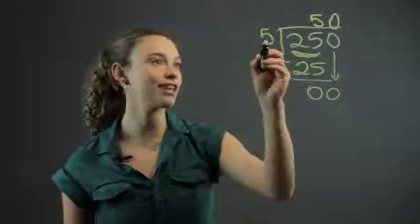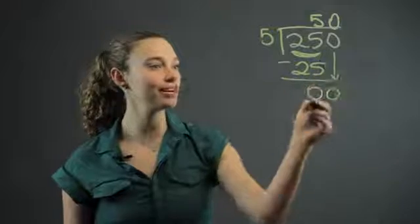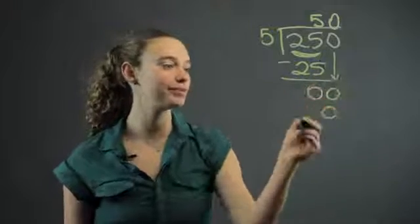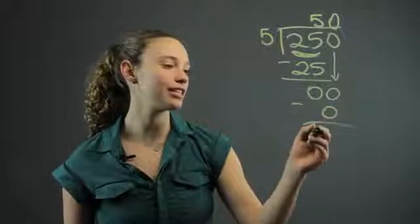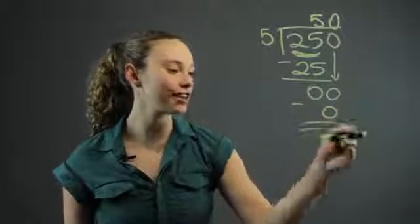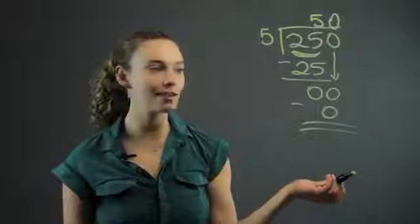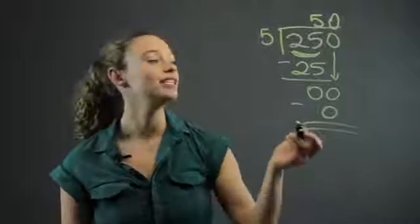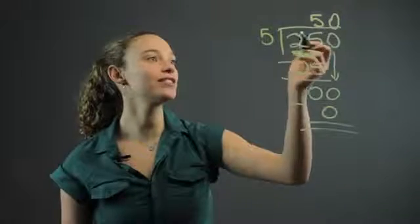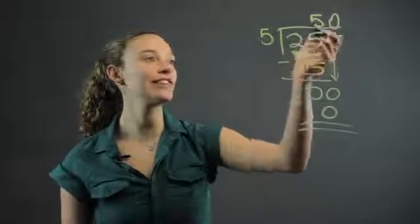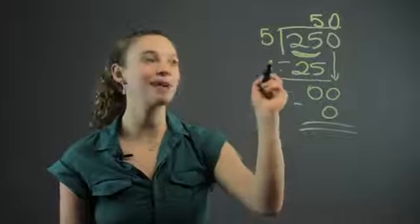Again, you multiply. You say 5 times 0 is 0. So 0 minus 0 is 0, and that's the end of the problem. There's nothing remaining. 5 goes into 250, 50 times. And that is our answer.